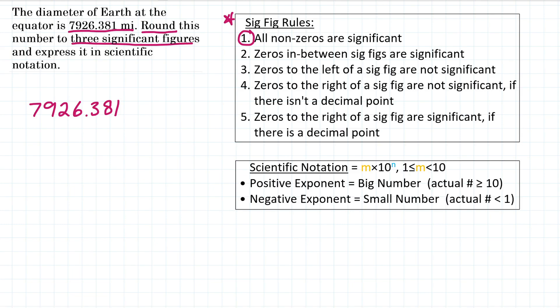So to do that, we're going to start from the left and go to the right, underlining our significant figures. So our first digit on the far left is seven. That is significant. So we'll underline it, underline the nine, and then the two. So those are our three significant figures.